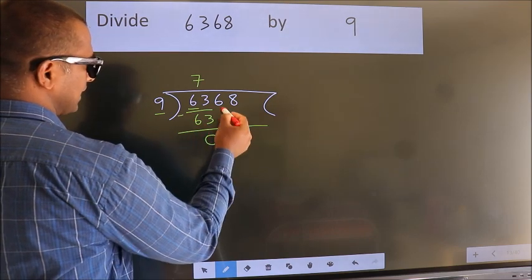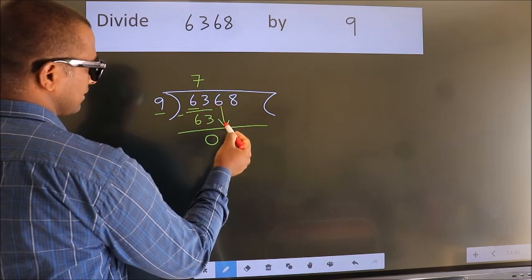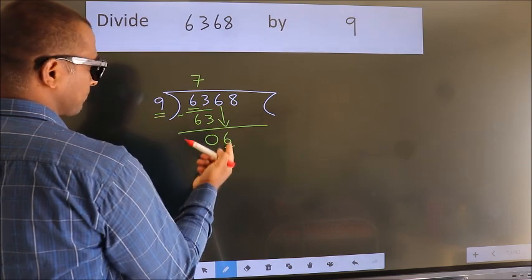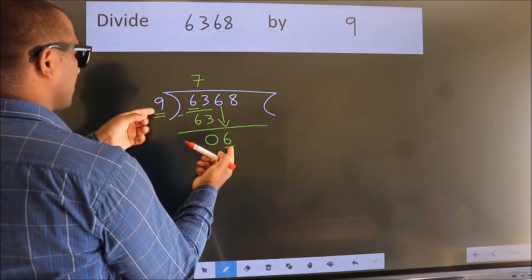After this, bring down the beside number. So, 6 down. Here we have 6, here 9. 6 smaller than 9.